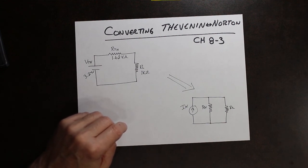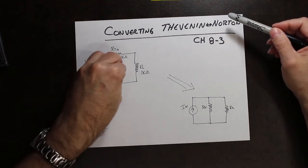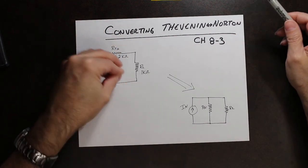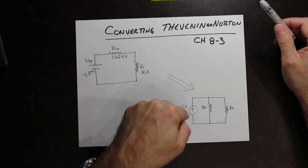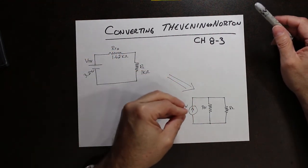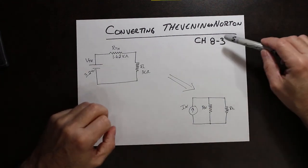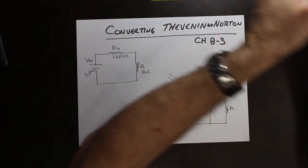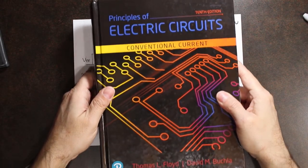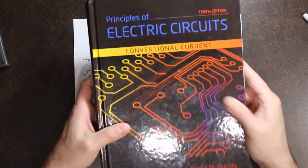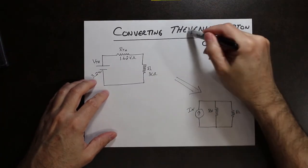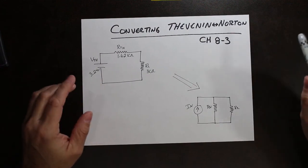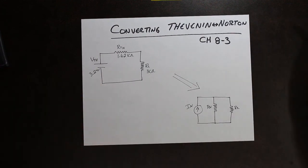Basically what we're going to do is take that voltage source — the Thevenin's supply or Thevenin's equivalent circuit — and convert it into a current source, or Norton's equivalent circuit. You can find this in chapter 8-3 of our textbook, Principles of Electric Circuits by Floyd and Buckla. Converting Thevenin to Norton is really simple — it's based on Ohm's Law.